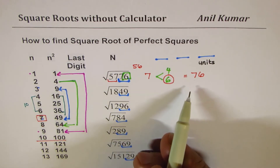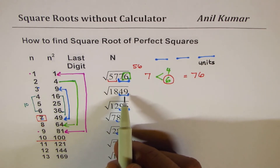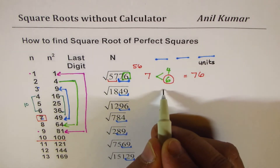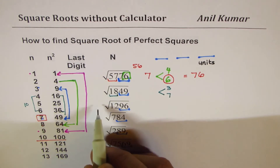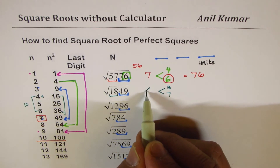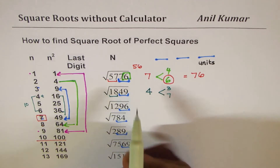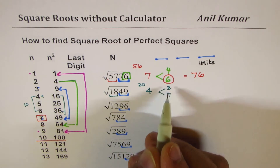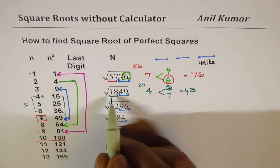So √5776 = 76. Now let's take 1849. Last digit 9 comes from 3²=9 or 7²=49, so two options: 3 or 7. The left group is 18. Since 4²=16 and 5²=25, the tens digit is 4. To choose between 3 and 7: 4×5=20. Since 18 is less than 20, we take the lesser number — 3. So our answer is 43, and indeed 43²=1849.